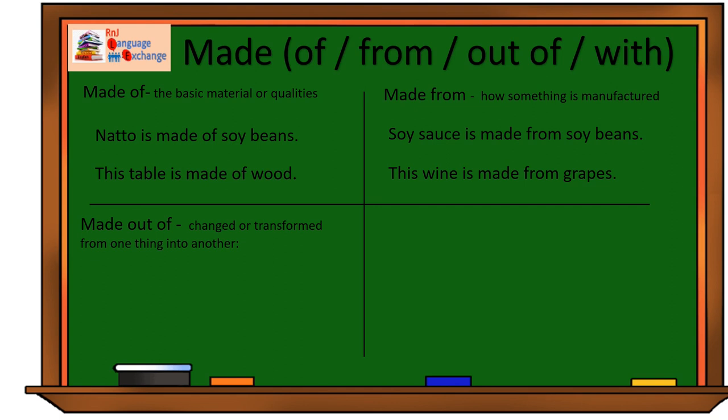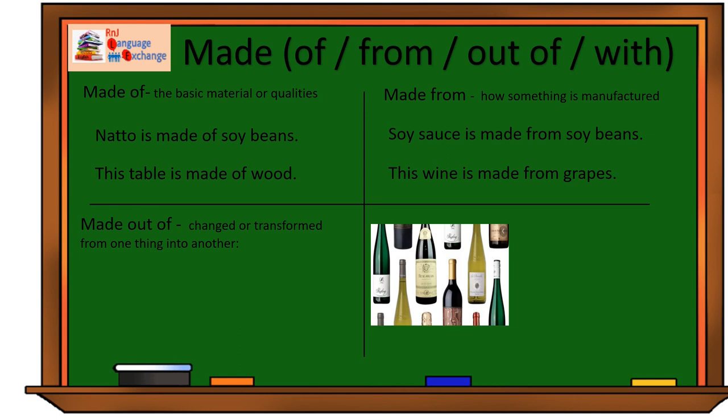To differentiate the two, we use made out of if we change the original purpose of the object. Wine bottle, for instance, is of course made to hold wine. Now, if I take a wine bottle and reuse it into something else, like a candle holder, then we should say, this candle holder is made out of wine bottle.